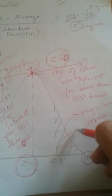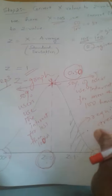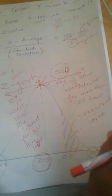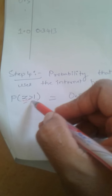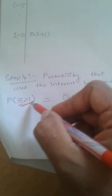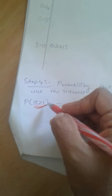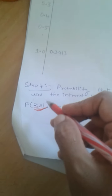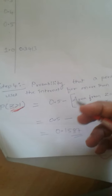Out of this 50 percent area, we have to find out how many users are using the internet for more than 105 hours, that is where z is equal to 1. We have to find out the area where z is equal to 1 or greater than 1.